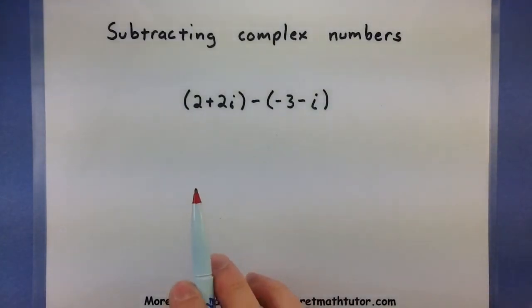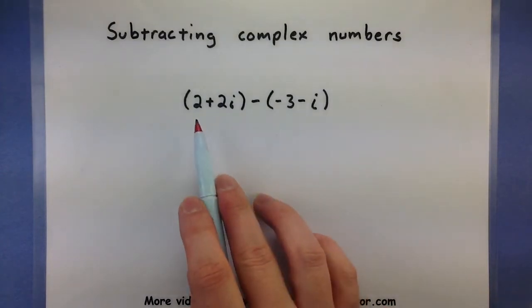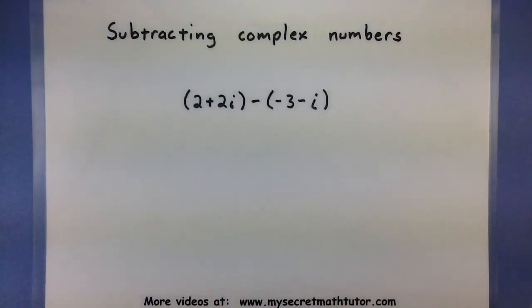So in my first step as I combine my two complex numbers here, 2 plus 2i and minus 3 minus i, that is the first thing I will do.